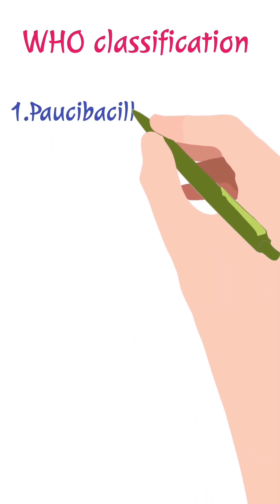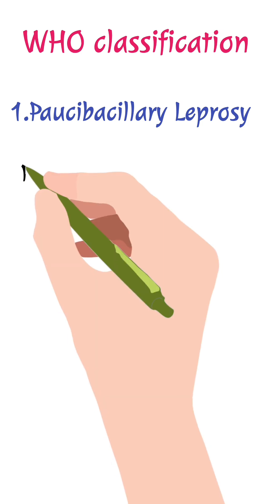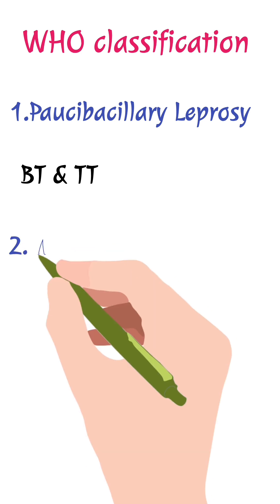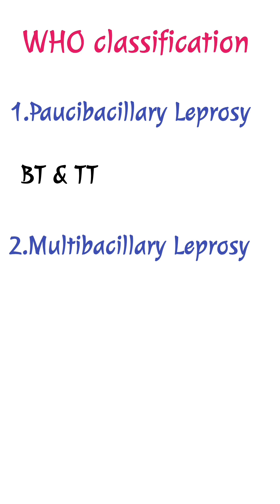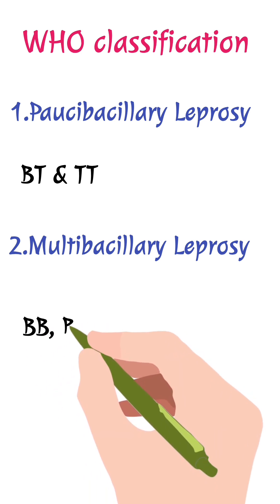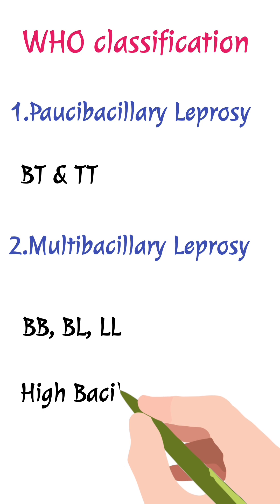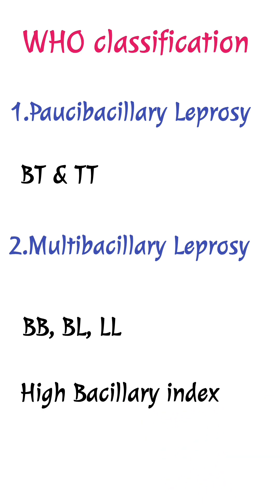The WHO classification divides leprosy into two categories: paucibacillary leprosy and multibacillary leprosy. In paucibacillary leprosy, borderline tuberculoid and tuberculoid leprosy are included, where the bacilli load is very low because immunity is high. In multibacillary leprosy, the underlying Ridley-Jopling types are borderline, borderline lepromatous, and lepromatous leprosy, where the bacillary index is very high because immunity is low. Thank you very much.